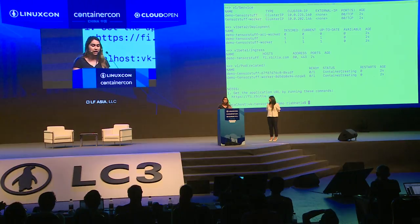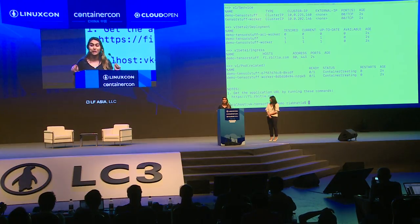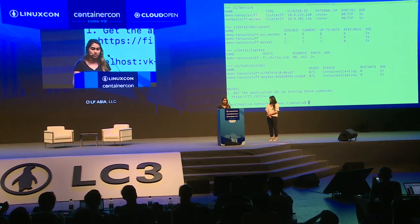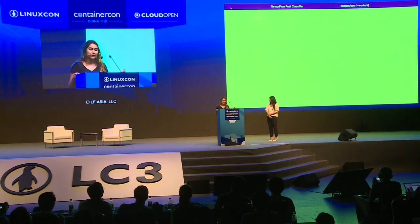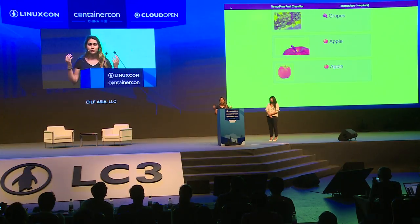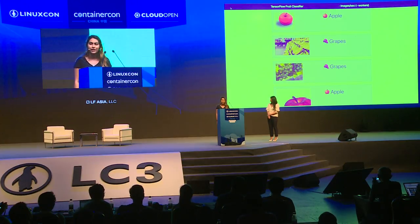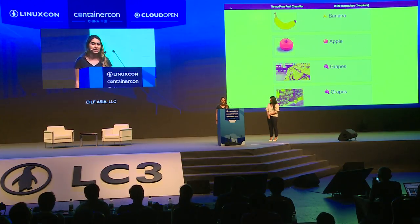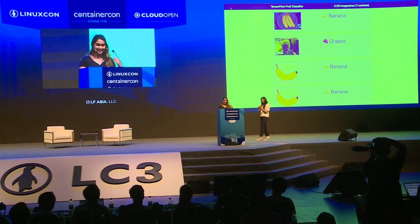It spits out my deployments, my services, my ingress, my pods — these were already created and all I had to do was a helm install. This makes Kubernetes so easy. Let's go hit the UI — there we go, it's a TensorFlow fruit classifier. It finds pictures of fruits and matches them to their different emojis. This is pretty awesome — it came up in seconds and Helm just did it all for me. Thank you so much, Ria!